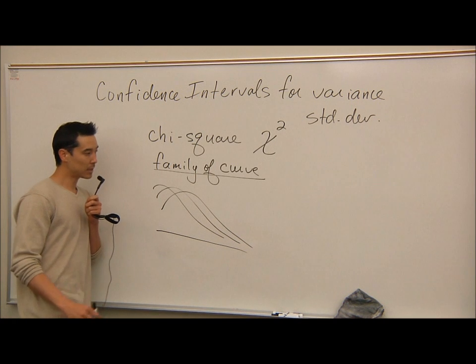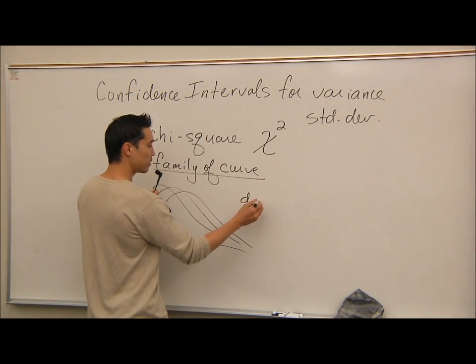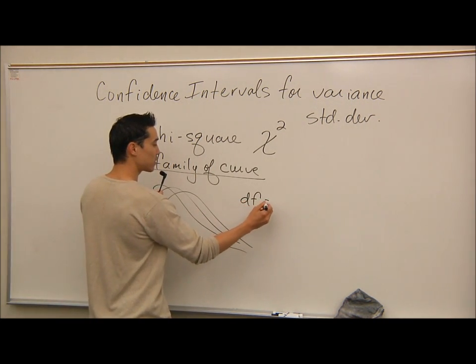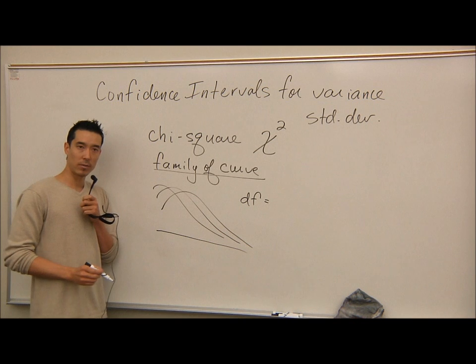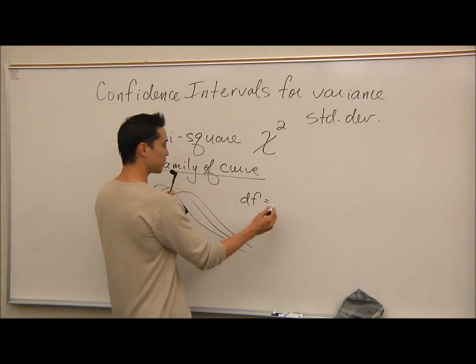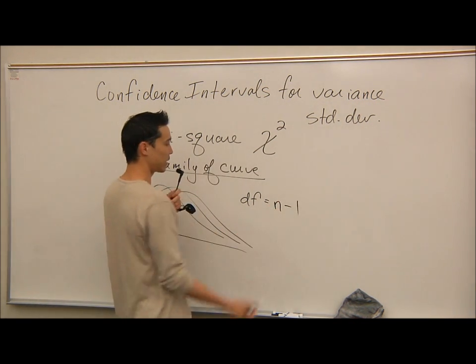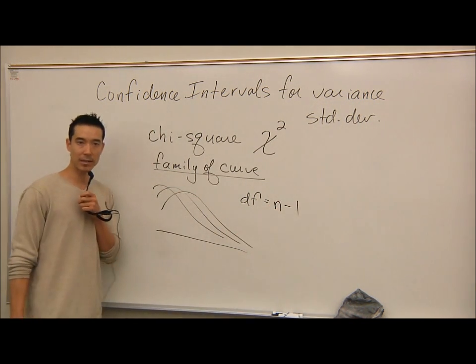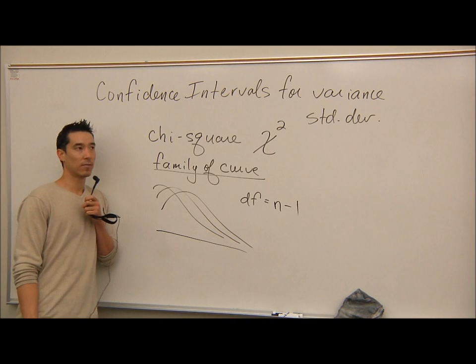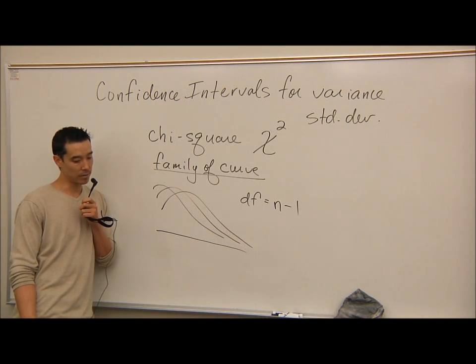For today's material, the degrees of freedom is similar to the t-distribution. What was the degrees of freedom for the t-distribution? n minus one. So it's still n minus one today for the chi-square distribution for confidence intervals for variances and standard deviation.